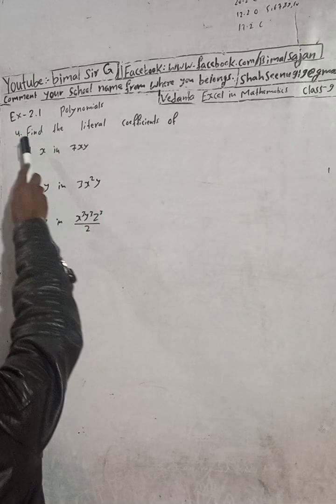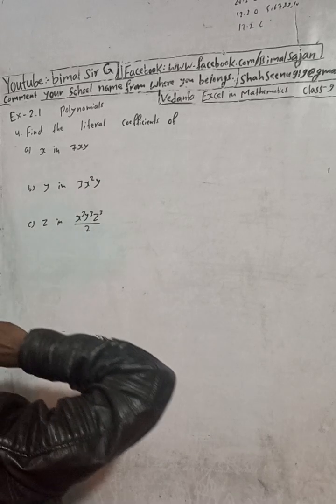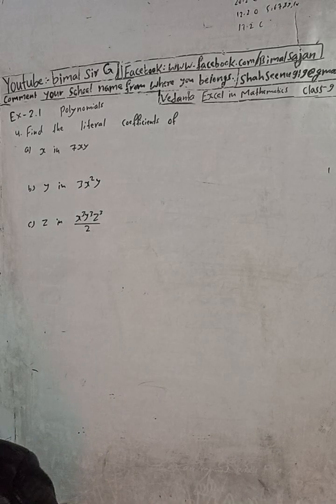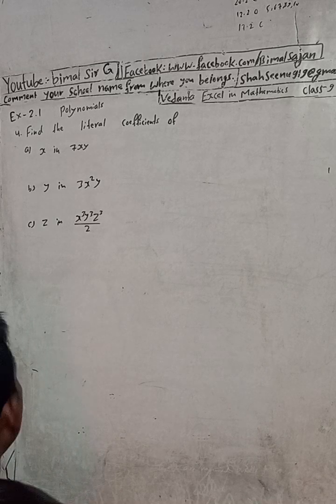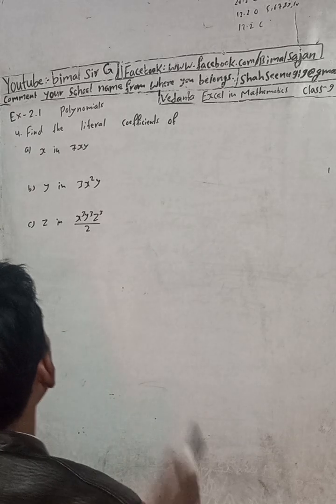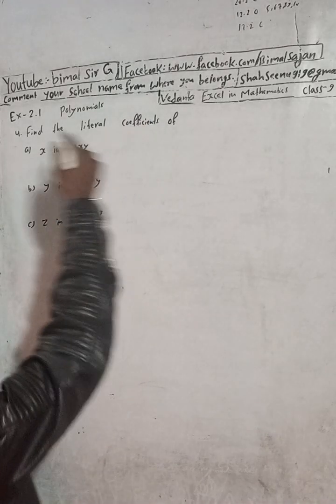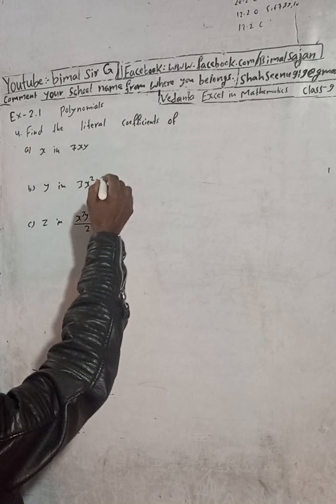The question is: find the literal coefficient of a, b, c. Literal coefficient means the alphabet used as the coefficient. Numerical coefficient we have already done in the previous questions. Literal coefficient means alphabet coefficient.